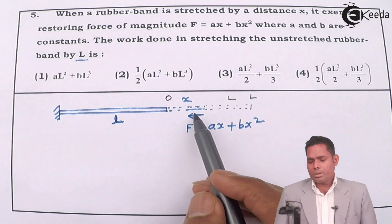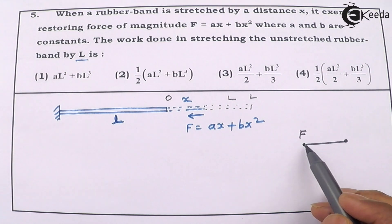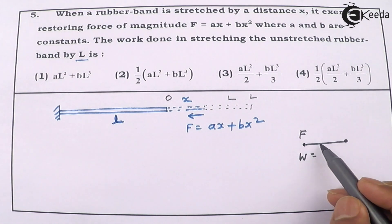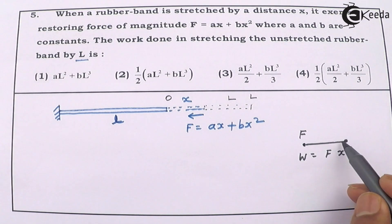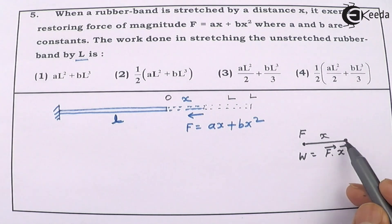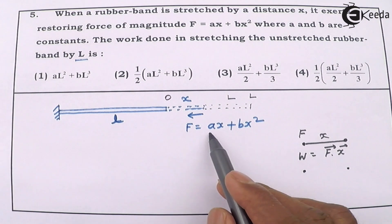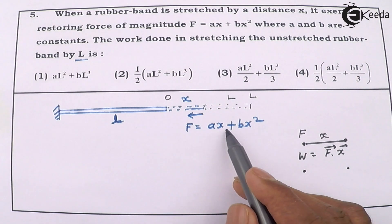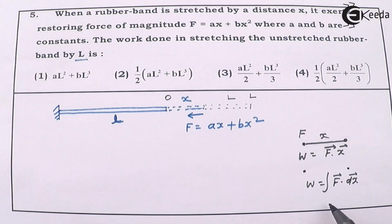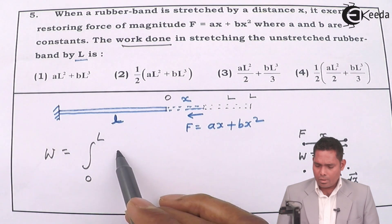This is how it looks, but the force is not constant. We know that if force is constant and a point of application of force is moving from here to here, then work done is F dot x — force multiplied by displacement in the same direction. But in case of a variable force, you can see that at x equals 0 the force is 0, but as you change the value of x the force will change. So in case of variable force, the work done is the integral of F dot dx. The work done is from 0 to L — that is integration from 0 to L of F dot dx.